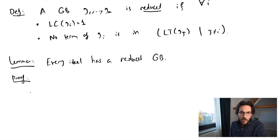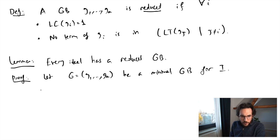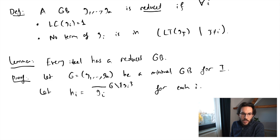We want to show that every ideal in a polynomial ring admits a reduced Grübner basis. Let g_1 through g_a be a minimal Grübner basis for some ideal I. We know how to construct a Grübner basis, and given one we can throw away elements with a redundant leading term to get a minimal Grübner basis. Now for each i, I take g_i and form the sequence g without g_i — omitting that element — and reduce g_i with respect to the other polynomials. This gives a remainder h_i from the polynomial division.